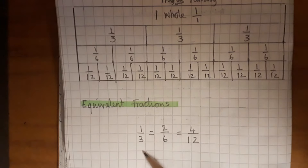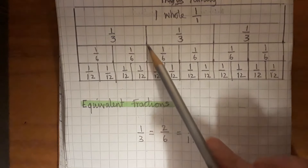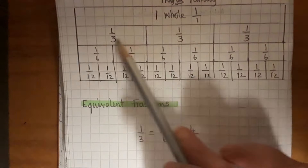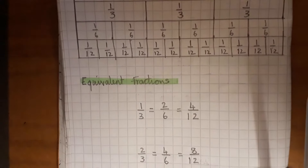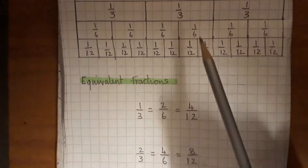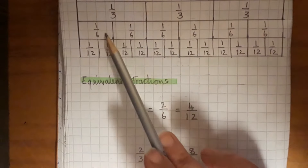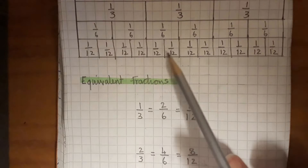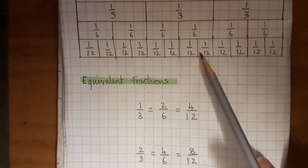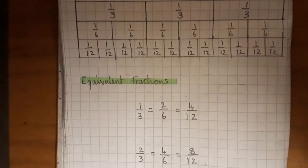Using this example: if we look at one third, that will be the same as two sixths, and that is the same as four twelfths. Looking at the next one, we've got two thirds — that's the same as four sixths, and eight twelfths. So the fraction walls are good at helping us with our equivalent fractions.